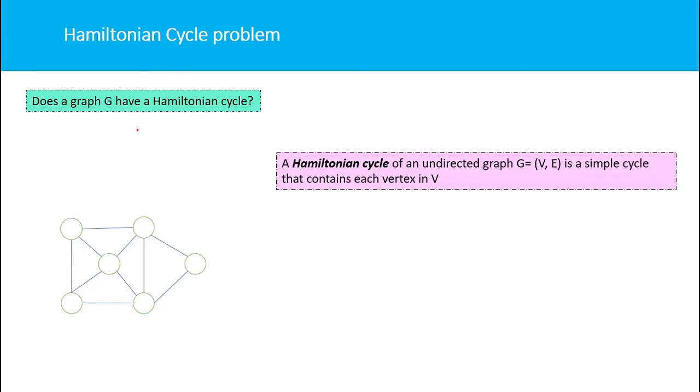that contains each vertex in G. Consider this cycle - it has every vertex of the graph, so we can say this graph has a Hamiltonian cycle.